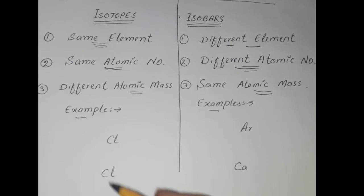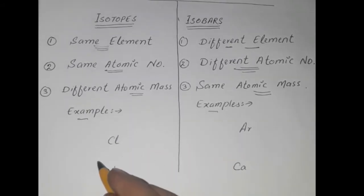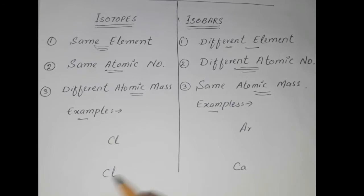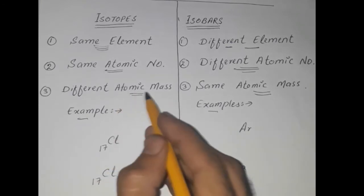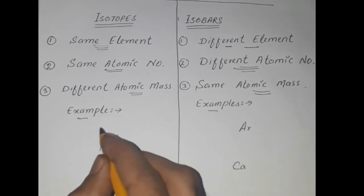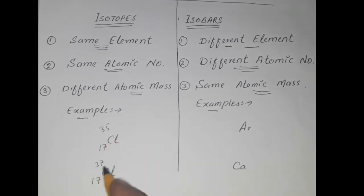Examples: Chlorine isotopes. Chlorine is an atom of the same element. The isotopes of chlorine have the same atomic number but different atomic masses. Chlorine-35 and Chlorine-37 have the same atomic number but different atomic masses — that is the chlorine isotope example.